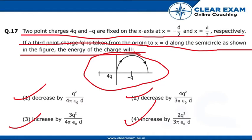Now let's see the solution. We know the energy formula is given by 1/(4πε₀) times charge divided by distance. So the initial energy can be calculated as 1/(4πε₀) times [4Q²/(D/2) - Q²/(D/2)].